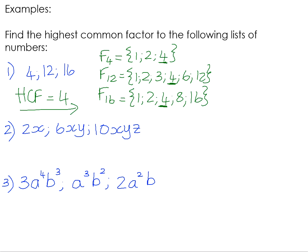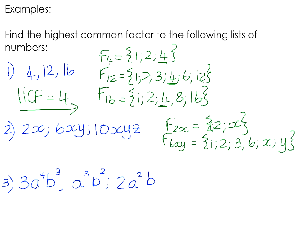When we have algebraic examples, we remember that a factor is a number that divides exactly without leaving a remainder. So the factors of 2x are 1, 2, and x. The factors of 6xy are 1, 2, 3, 6, x, and y. And the factors of 10xyz are 1, 2, 5, 10, x, y, and z — all the parts that are multiplied together.